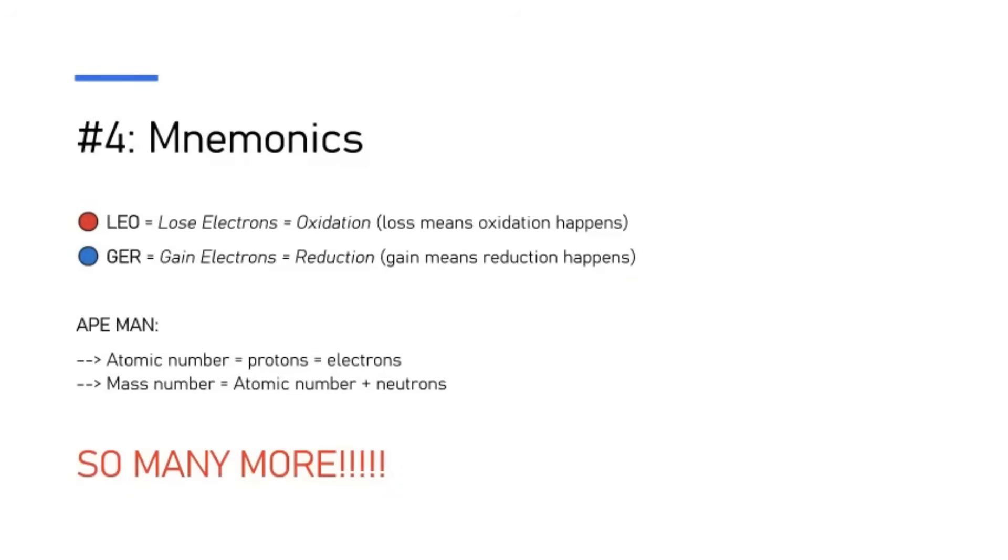Next is to use mnemonics. So stuff like LEO the lion goes GER to remember oxidation and reduction, whether you lose electrons or gain electrons, or APE MAN, the equations for atomic number, mass number, there are so many more. Search them up, you can find a Quizlet, it's super helpful. If you just take maybe like half an hour to remember these, because the less you spend memorizing, the more you can just instantly recall them because you know these mnemonics, the better.